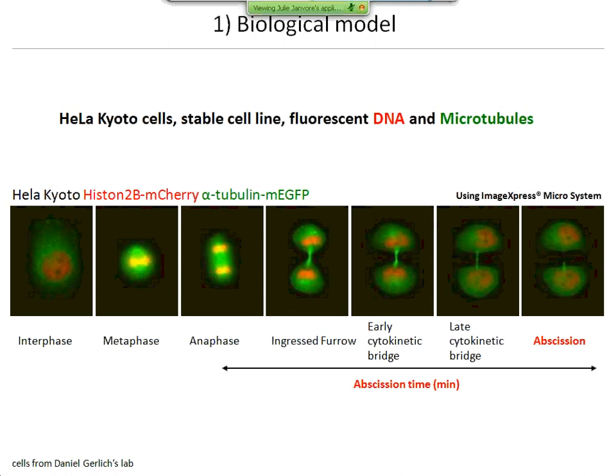The model cells we are using are in vitro HeLa cells — specifically HeLa S3 cells, a particular cell line stably expressing fluorescent markers for DNA in red and microtubules in green. With this cell line we can really easily follow the different steps of cell division from the beginning through anaphase all the way to the end. We can follow the formation of the bridge, the maturation, and the severing of the bridge — the very last image showing abscission.